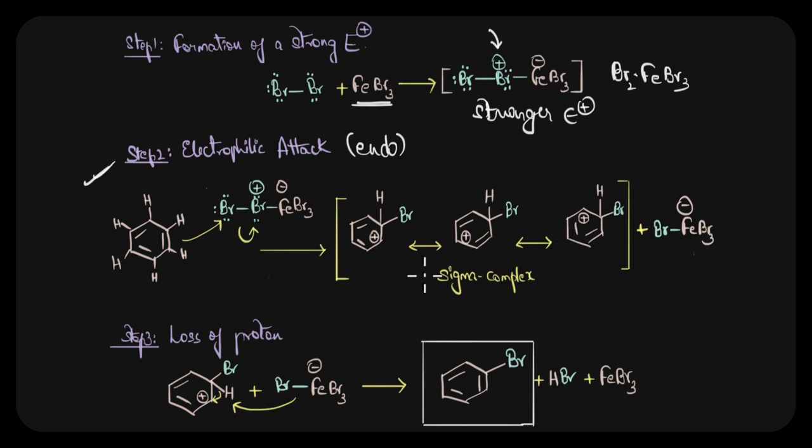In the last step a proton is lost and aromaticity is regained. Here FeBr4- has a negative charge and the bromide ion acts as a weak base and abstracts this hydrogen atom from the sigma complex. This removal of hydrogen atom restores the aromaticity and gives us the final haloarene. In this process an acid HBr is produced and our catalyst FeBr3 is regenerated.